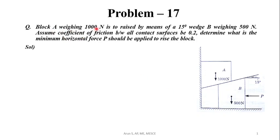Block A weighing 1000 N is raised by means of a 15 degree wedge B weighing 500 N. Assume coefficient of friction between all contact surfaces is 0.2. What is the minimum force P that should be applied to wedge B to raise the block?